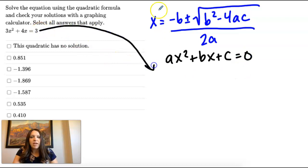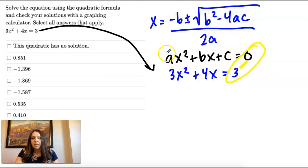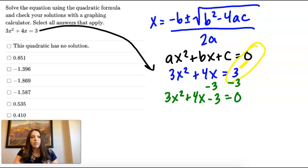So when I bring down what I have here, I don't have equals 0, I have equals 3. So I'm going to have to do some rearranging. I'm going to subtract the 3 from both sides. So I have 3x squared plus 4x minus 3. So I have that equal 0. So now I'm in standard form.